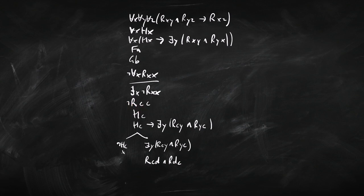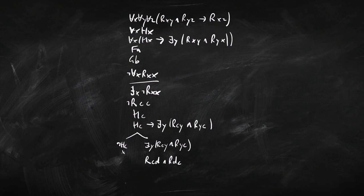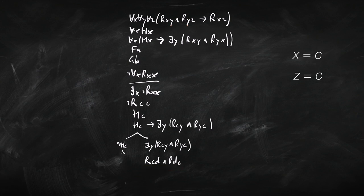Here's the clue: we've got 'not R, c, c' — a negated sentence. I want to get 'R, c, c' on its own to close the branch. This is the sentence I haven't used yet, so I'm going to try to get R, c, c out of it. The consequent has x and z in it, hinting that I want x to be c and z to be c. Looking at the sentence with R, c, d and R, d, c — that's got c for x and c for z — so that tells me I want y to be d. If I put c in for x and z, and d in for y, I'll get an instance that lets me close the tree. So I'm going to instantiate the sentence one quantifier at a time: c for x, d for y, and c for z.